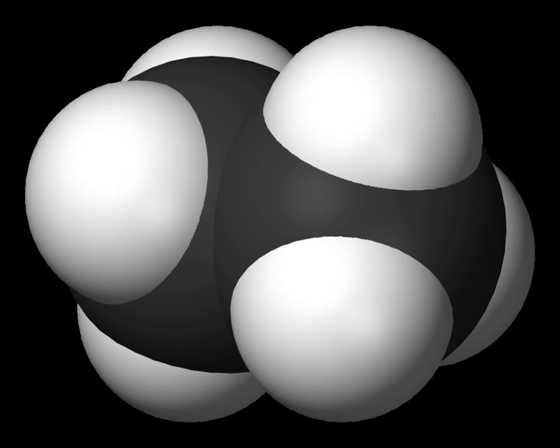Rotating a molecular substructure about a twistable bond usually requires energy. The minimum energy to produce a 360-degree bond rotation is called the rotational barrier. Ethane gives a classic, simple example of such a rotational barrier, sometimes called the ethane barrier.